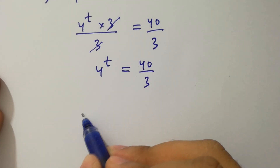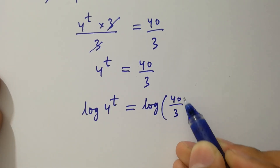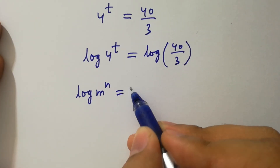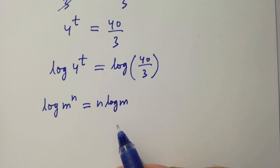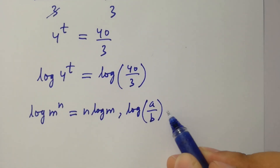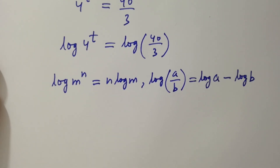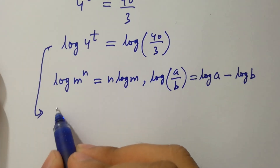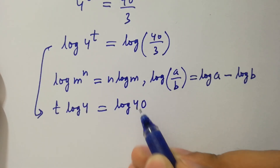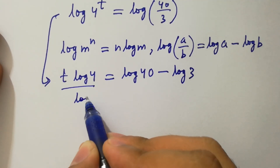Take log on both sides. Since log m to the power n equals n log m, and log a over b equals log a minus log b, it will be t log 4 equal to log 40 minus log 3. Then divide by log 4 on both sides.